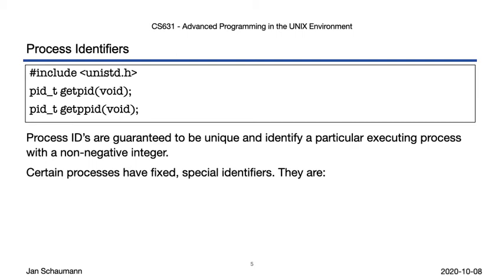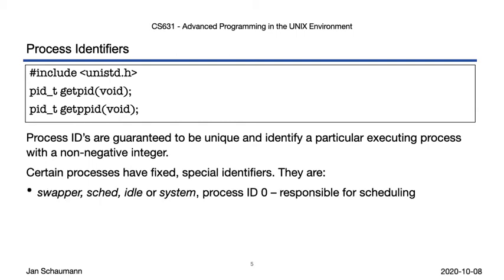However, there are some exceptions. When the system boots up, the kernel has to explicitly create certain processes. Process ID 0 used to be referred to as the swapper process, sometimes known as SCED in System V-derived Unix versions. It was responsible for swapping entire processes out to disk and back in when ready. On Linux systems, process 0 was the idle process, doing nothing but ensuring that there's always a process ready to be scheduled. Nowadays, most Unix systems use PID 0 as the system process that handles a bunch of related scheduling things, best left to your operating system class to discuss.